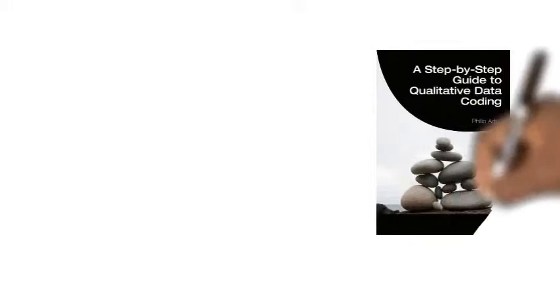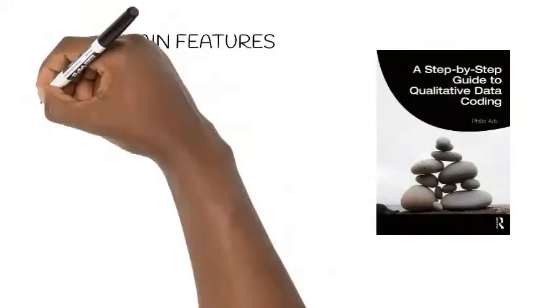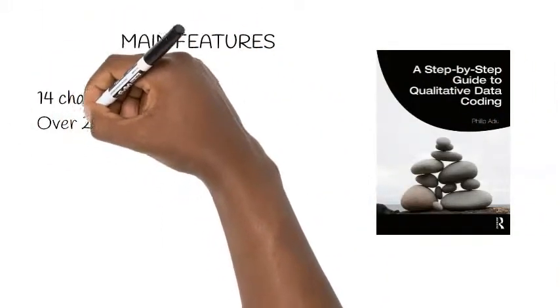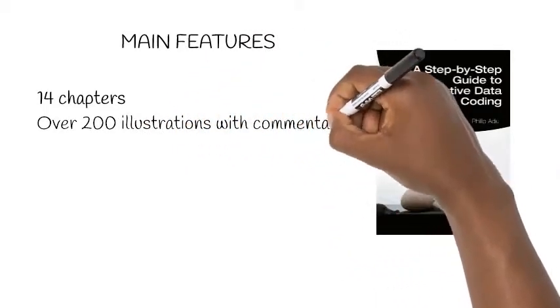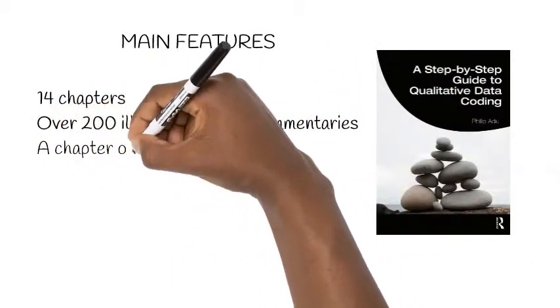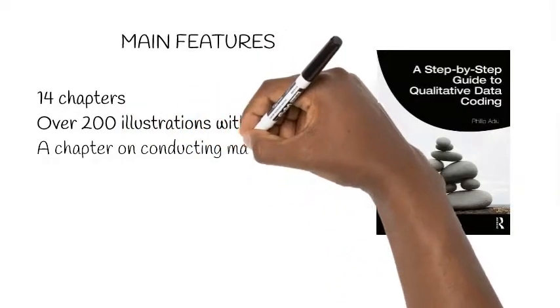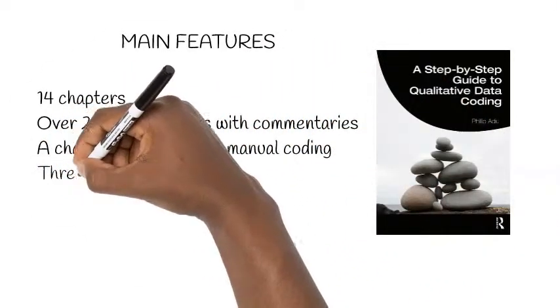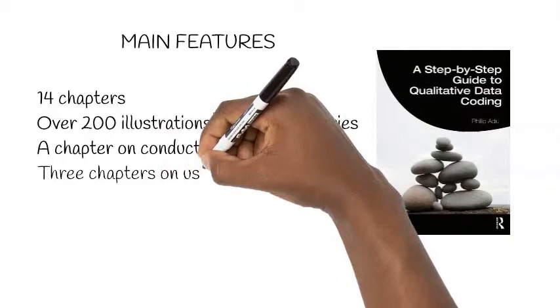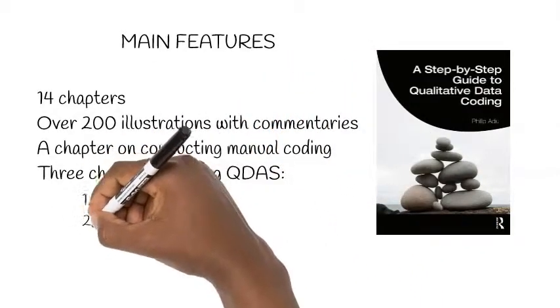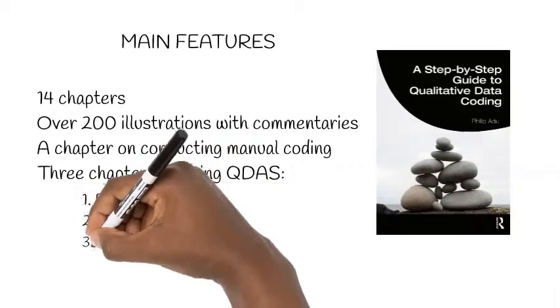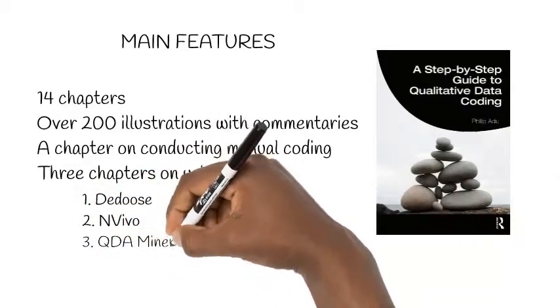Here are the main features of the book. It has 14 chapters, over 200 illustrations with commentaries, a chapter on conducting manual coding using Microsoft Word, and three chapters dedicated to using qualitative analysis software such as Dedoose, NVivo, and QDA Miner Lite.